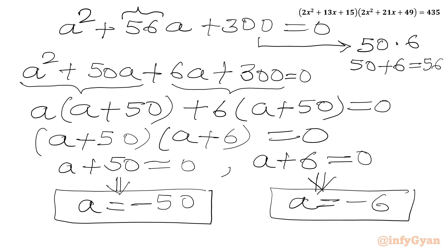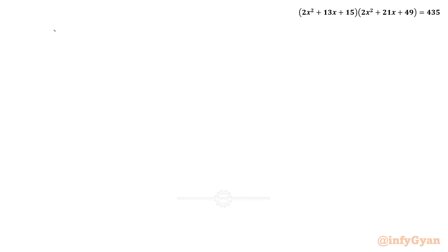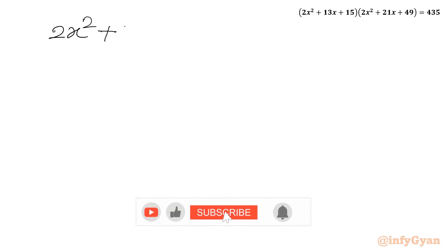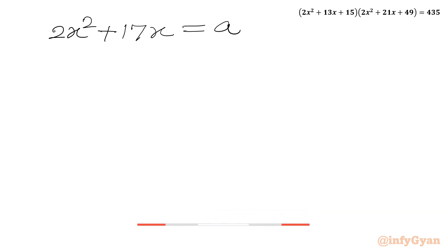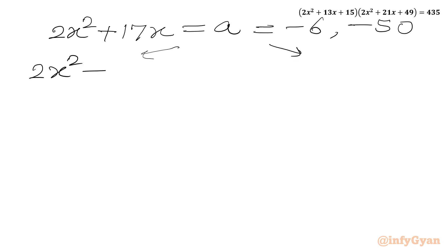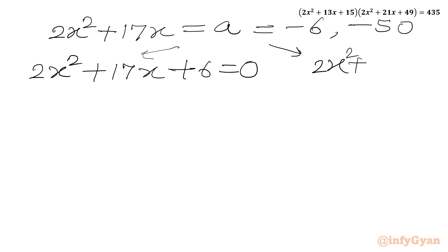Now a was our substitution: 2x² + 7x. Putting the values back, 2x² + 7x equals −6 and −50, giving us two quadratic equations. First: 2x² + 7x + 6 = 0. Second: 2x² + 7x + 50 = 0.